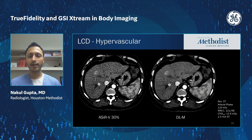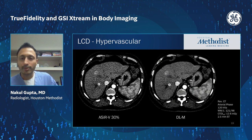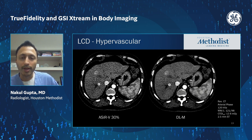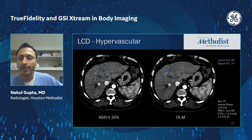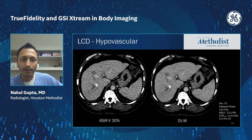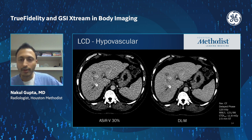Low contrast detectability is another area where deep learning reconstruction can be helpful. Here's an example showing a hypervascular lesion of low to mid contrast level, requiring pretty aggressive window level adjustments to make it conspicuous. On the deep learning medium reconstruction, the lesion is more conspicuous than on the ACERV image — the contrast difference between lesion and background was about 17 Hounsfield units. Looking at that same lesion in the portal and delayed phase for washout, the lesion-to-background contrast is if anything more conspicuous on deep learning medium, with about a 16 Hounsfield unit difference.